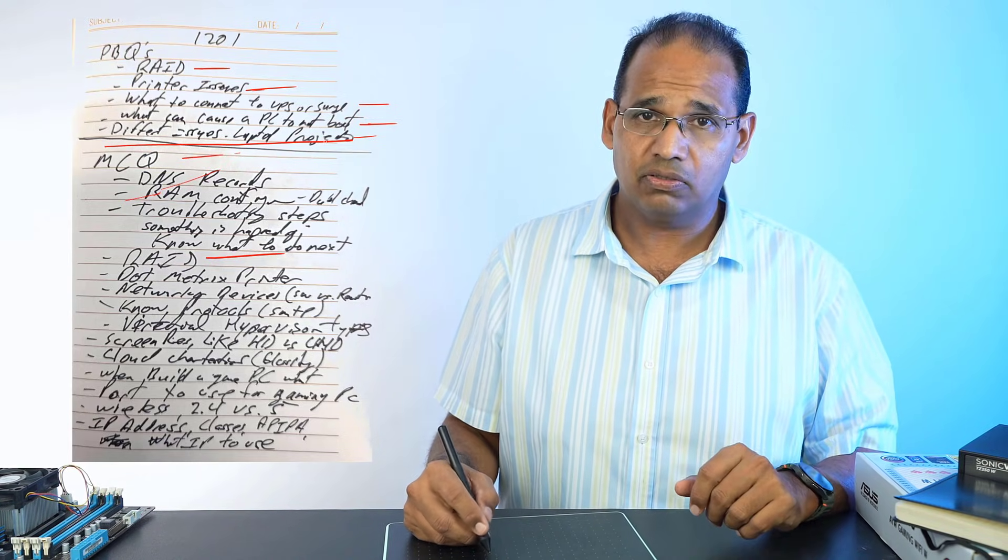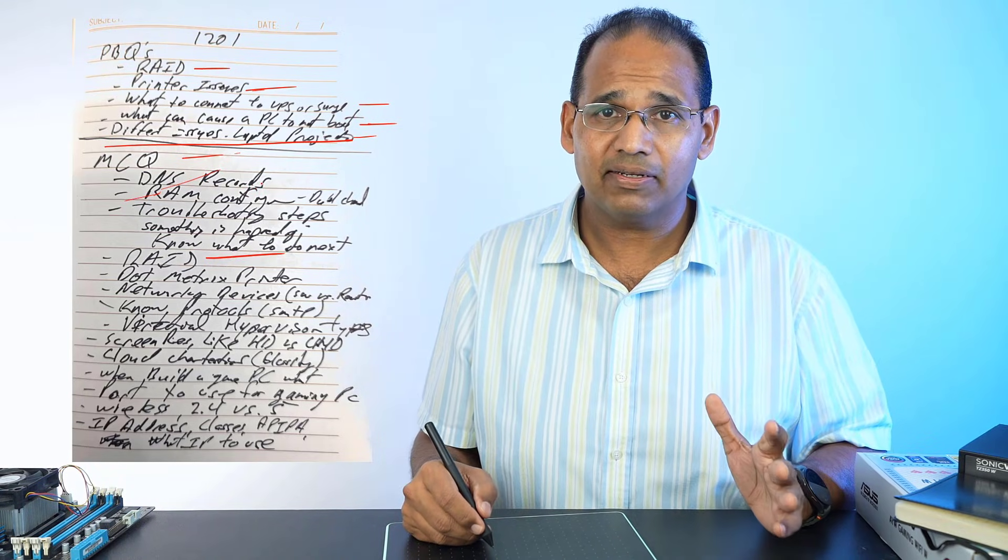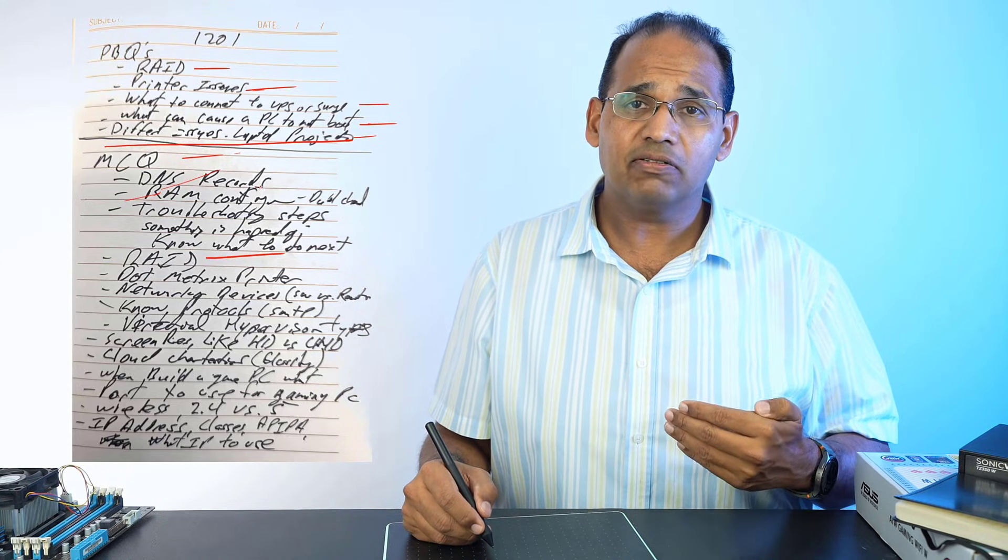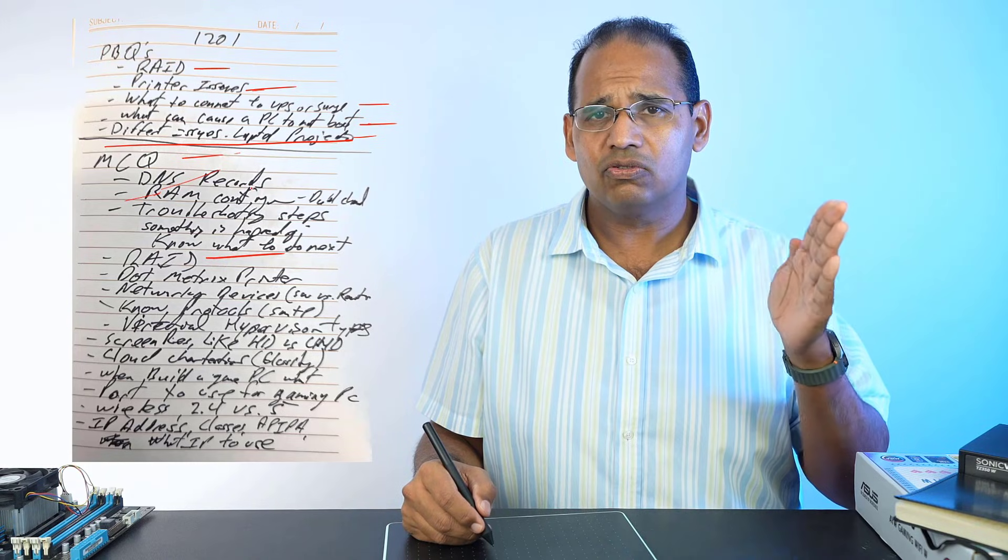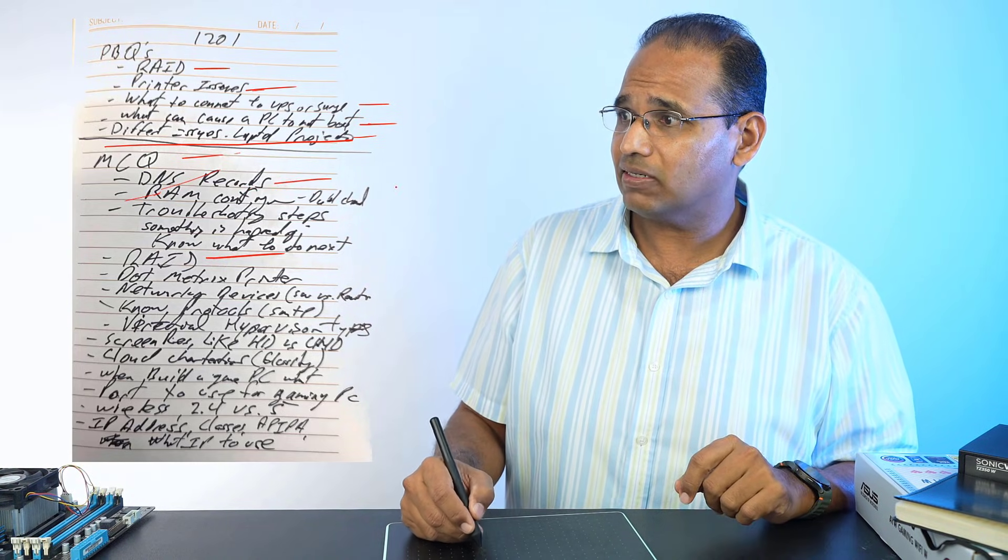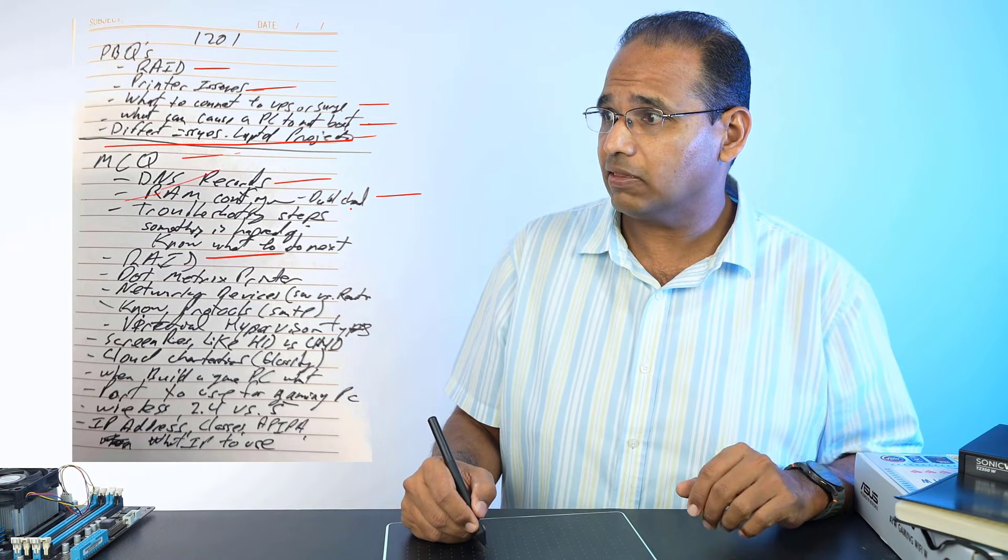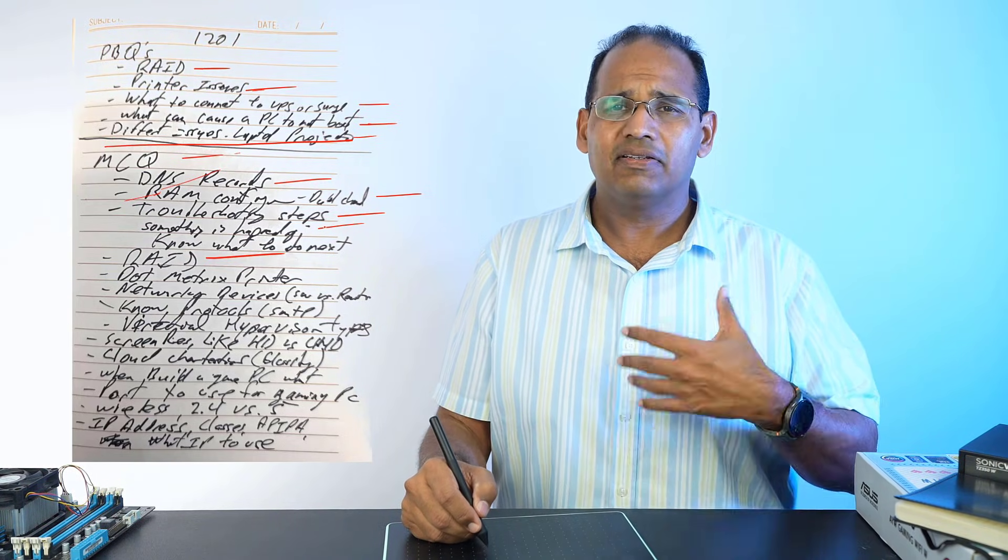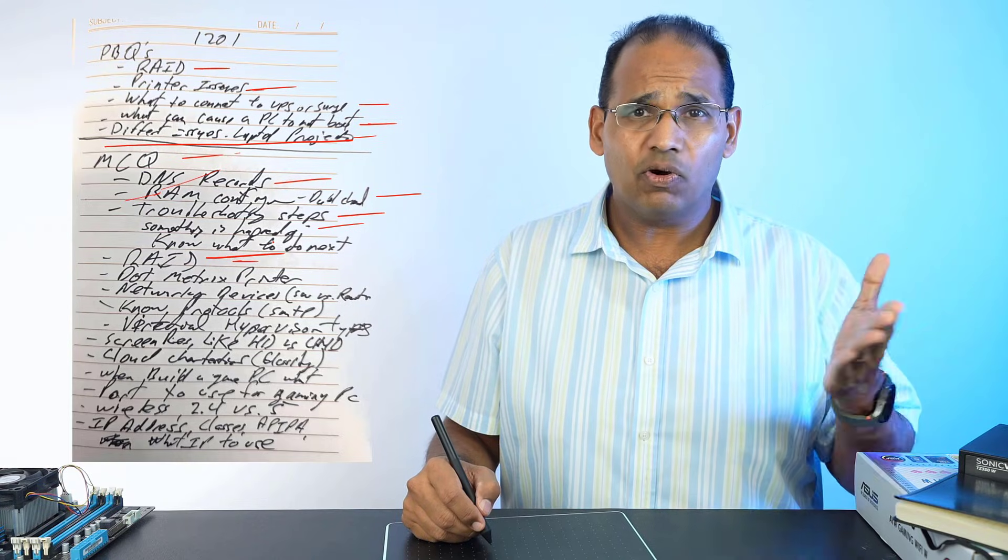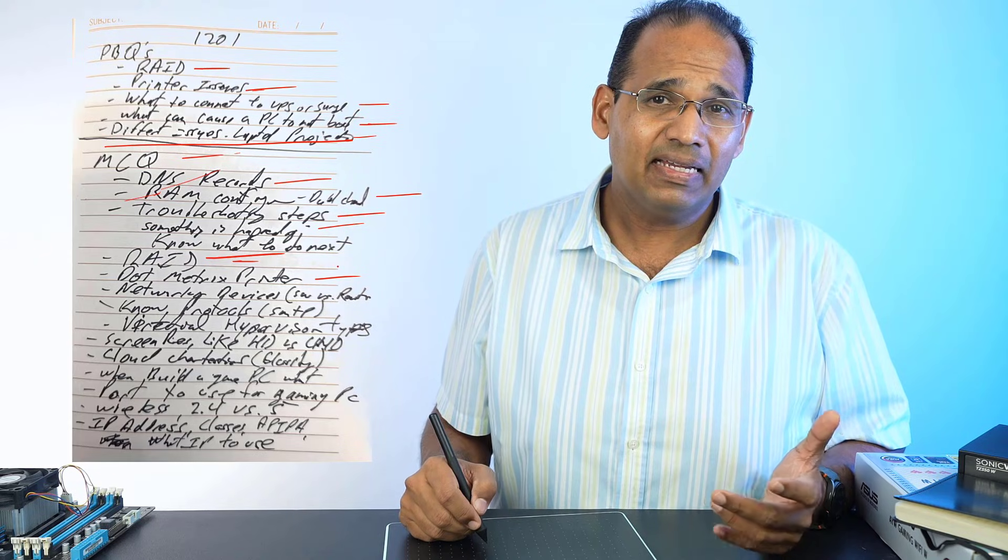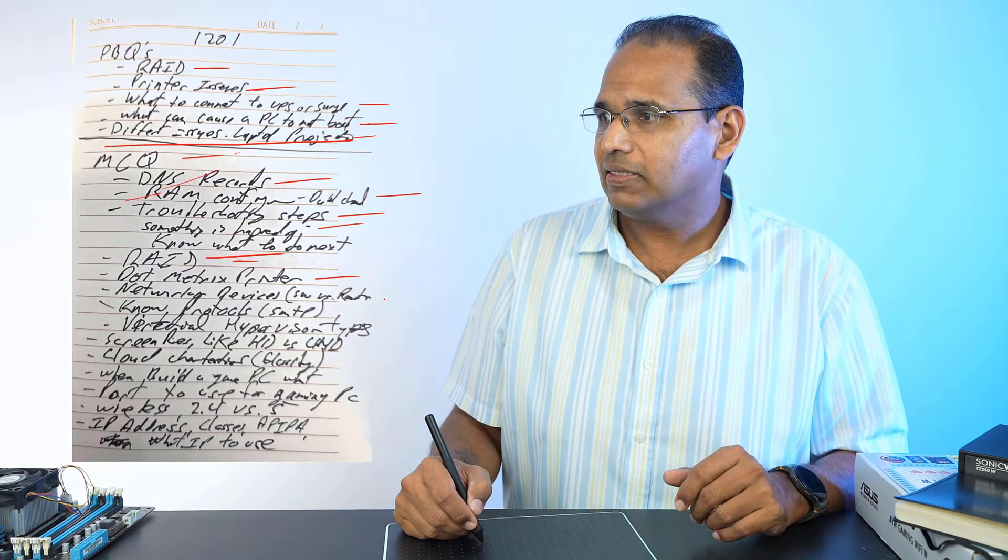Multiple choice questions - you need to know different types of DNS records: A record versus quad A record versus TXT record. TXT can be used for email security, quad A for IPv6, A record for IPv4. Know RAM types - ECC RAM versus dual channel or triple channel. Troubleshooting steps, lots of 'what should the technician do next' questions. Know your RAIDs 0, 1, and 5. Oddly enough, dot matrix printers are still on the exam with print heads and ribbons.